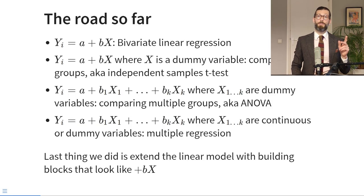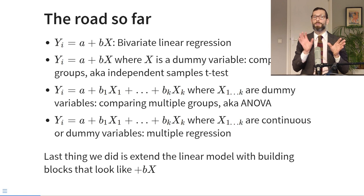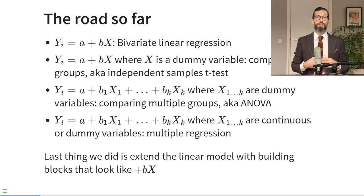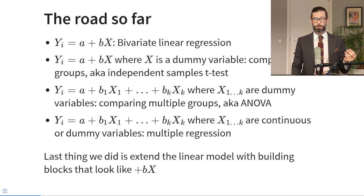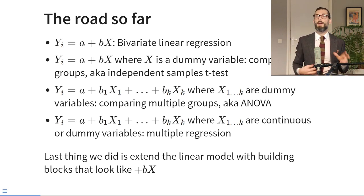The last thing we did in this course is extending the bivariate regression model with additional building blocks, where each building block had the shape plus b times x — a slope times a predictor. We could add as many of these blocks as we wanted, and every block represents an additional predictor. Today we're adding a special kind of building block — similar but different — and that is the interaction effect.